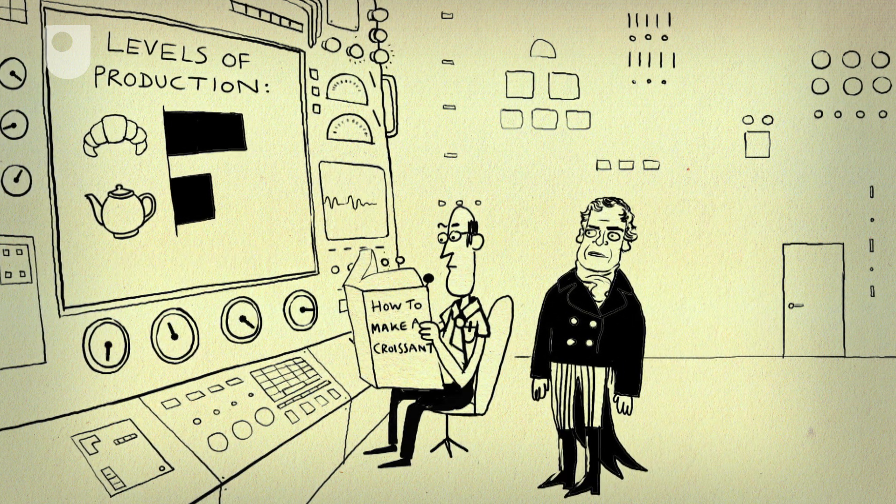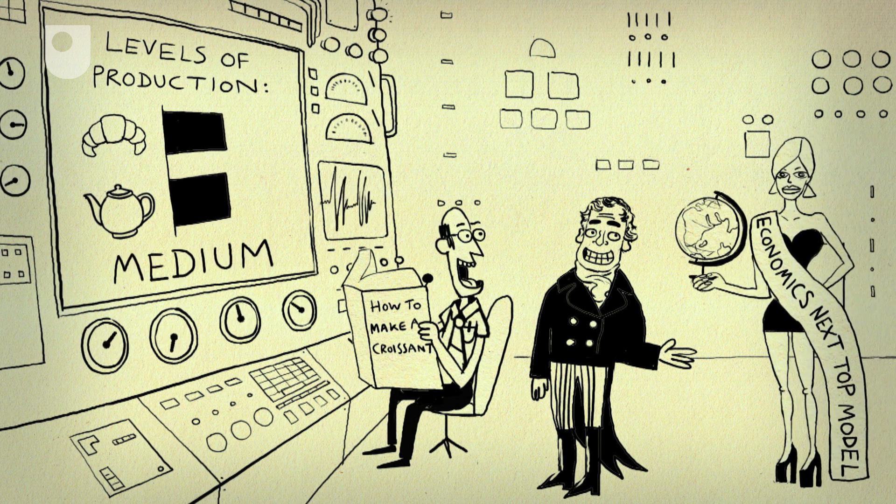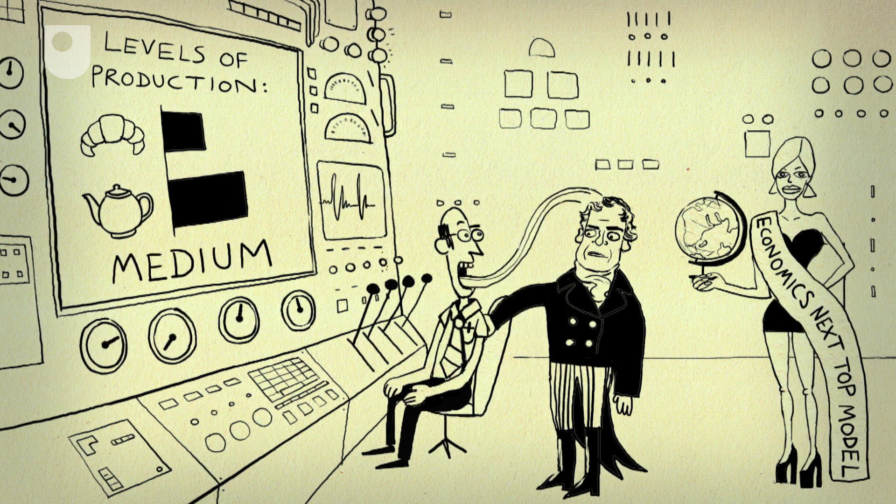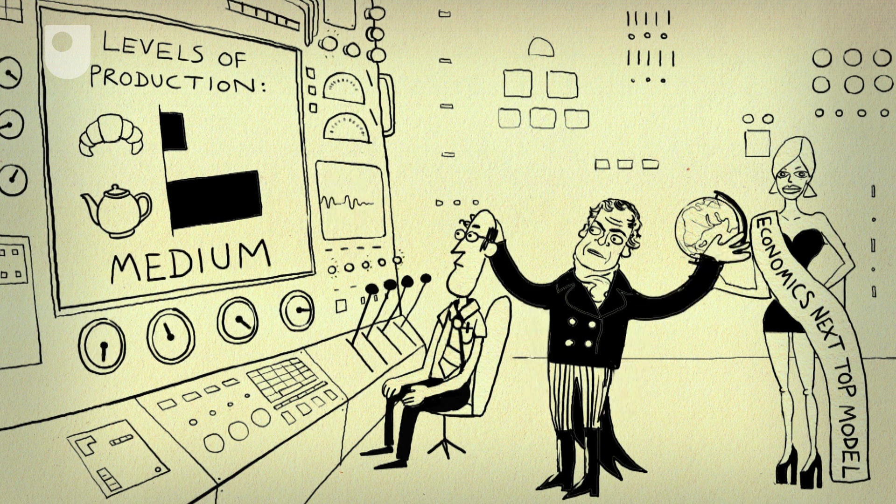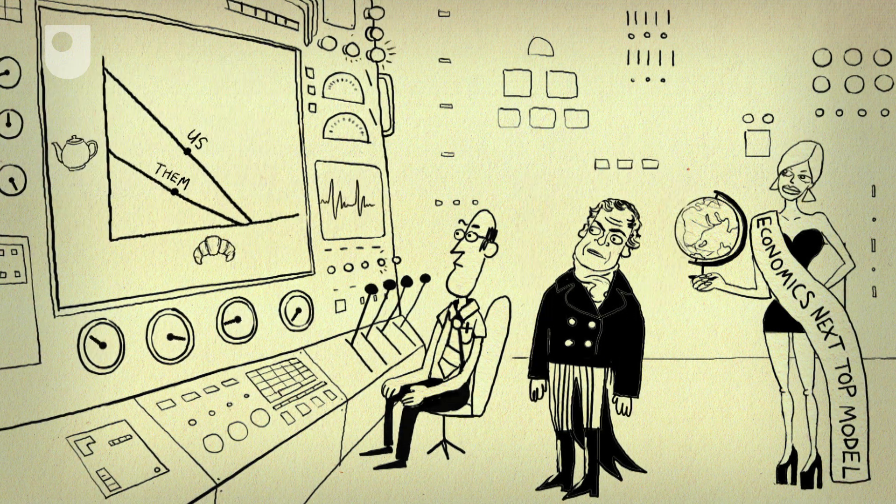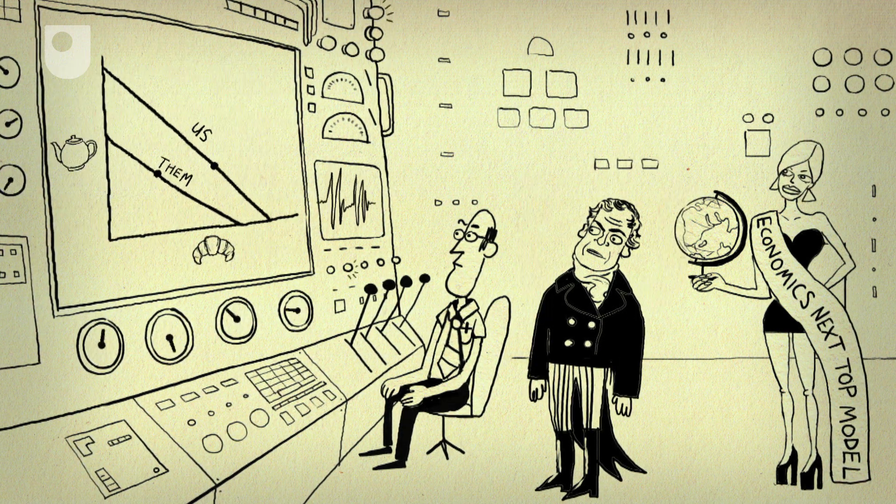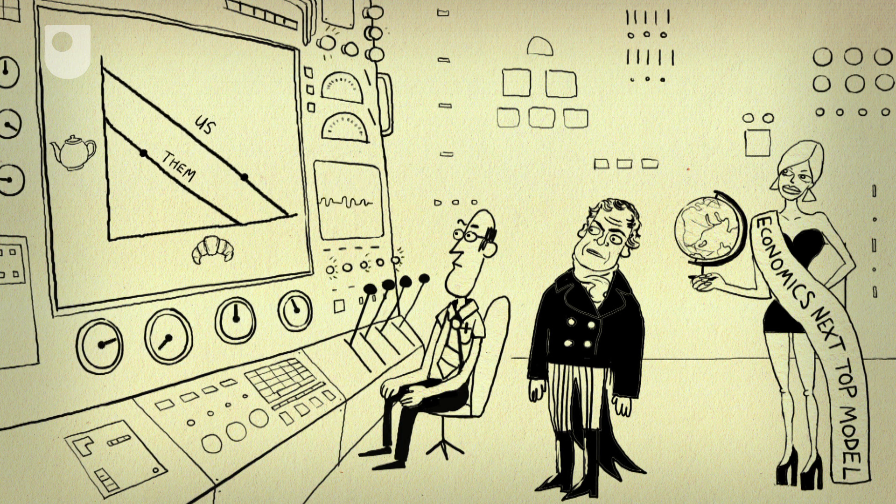He pointed out that even if a country can produce pretty much everything at the lowest possible cost, with what economists call an absolute advantage, it's still better to focus on the products it can make most efficiently, that sacrifice the least amount of other goods, and let the rest of the world do the same.